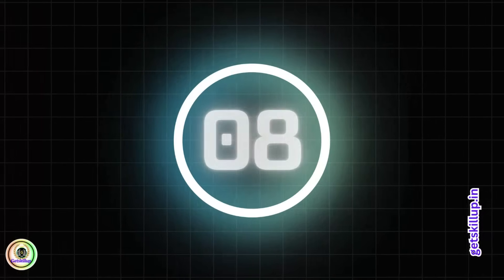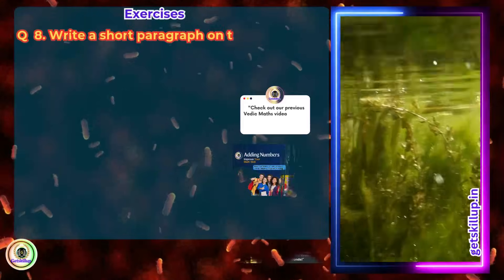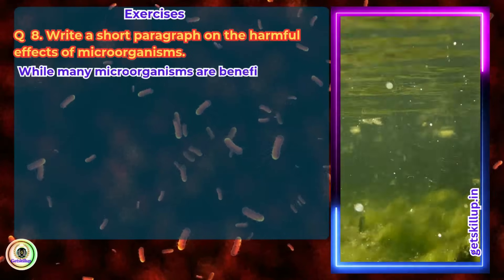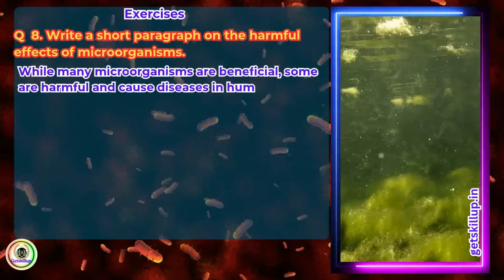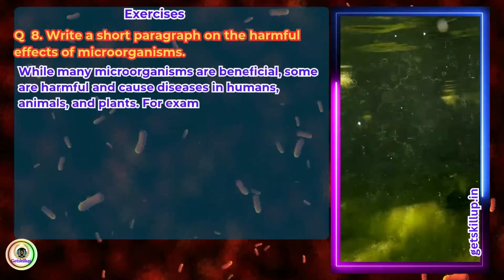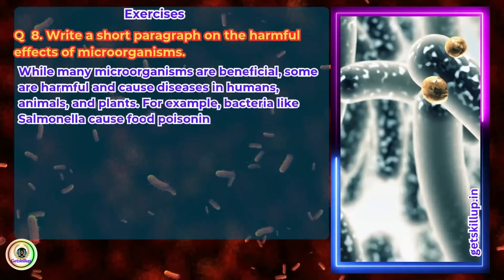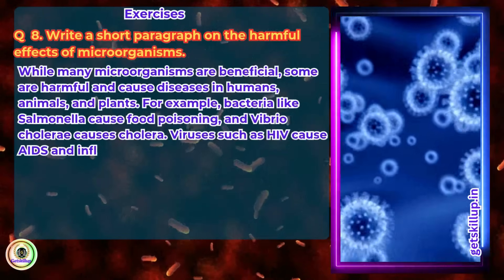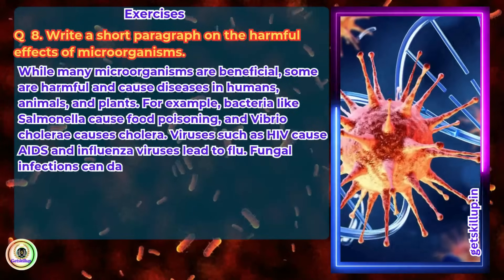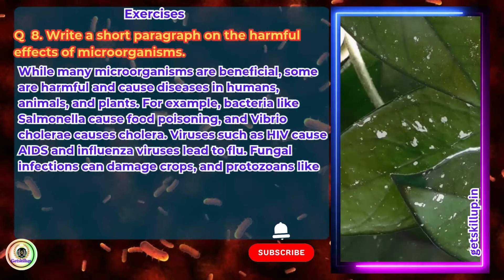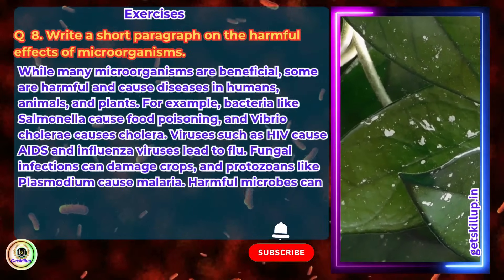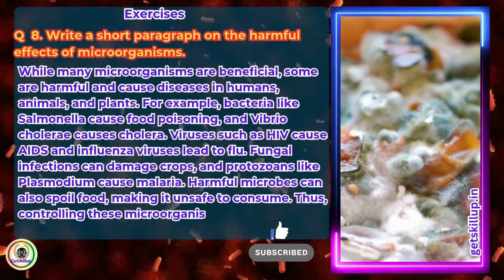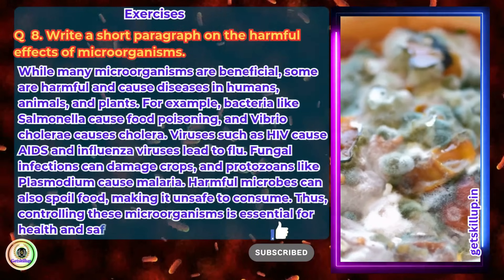Question 8. Write a short paragraph on the harmful effects of microorganisms. Answer: While many microorganisms are beneficial, some are harmful and cause diseases in humans, animals, and plants. For example, bacteria like Salmonella cause food poisoning and Vibrio cholerae causes cholera. Viruses such as HIV cause AIDS and influenza viruses lead to flu. Fungal infections can damage crops and protozoans like Plasmodium cause malaria. Harmful microbes can also spoil food, making it unsafe to consume. Thus, controlling these microorganisms is essential for health and safety.